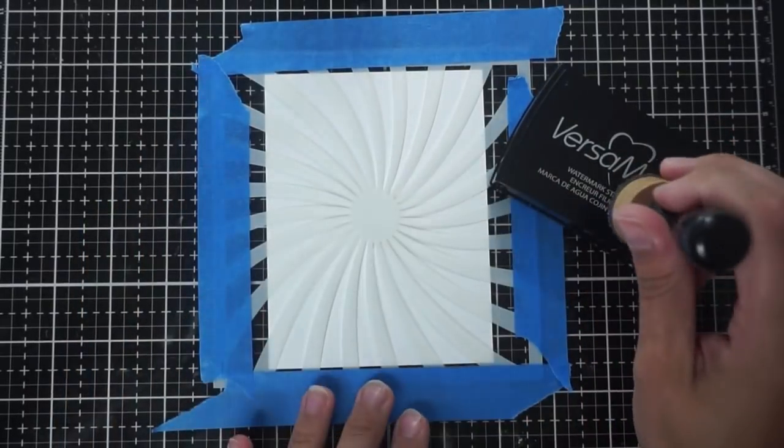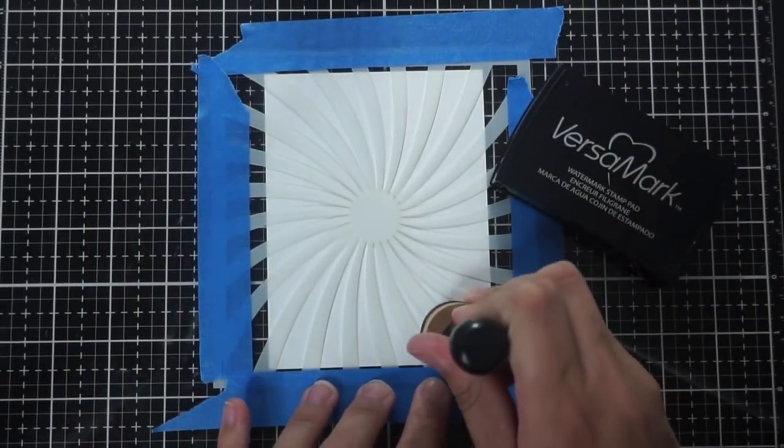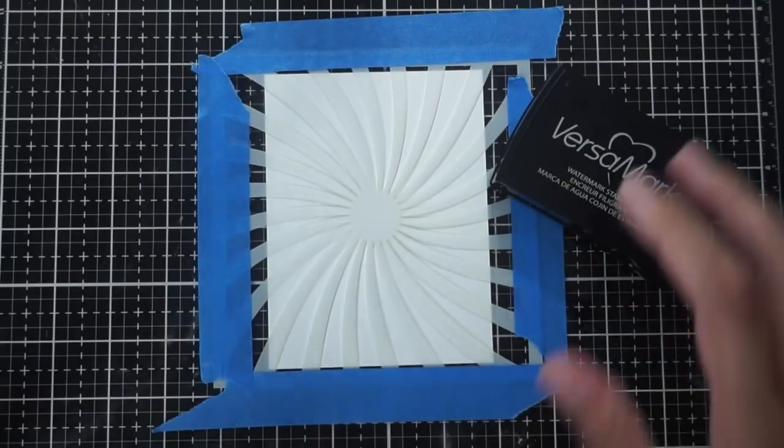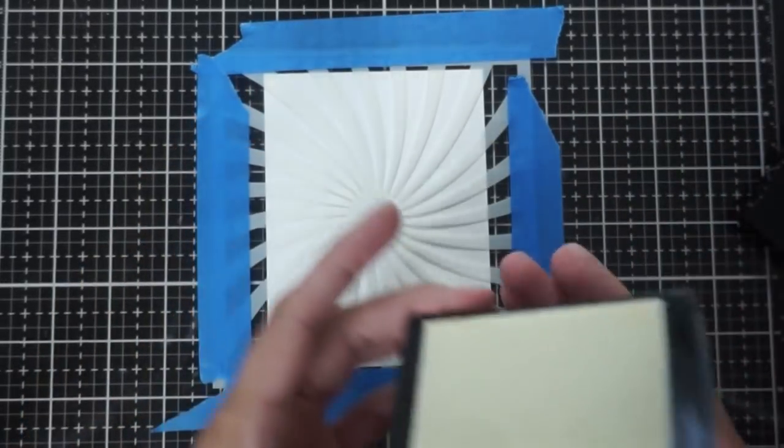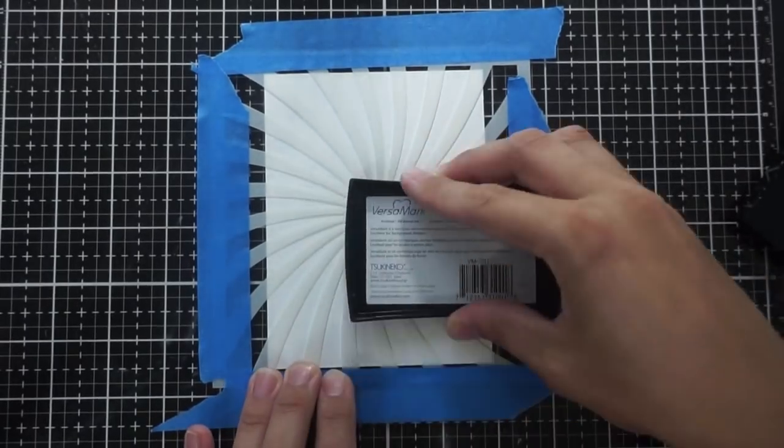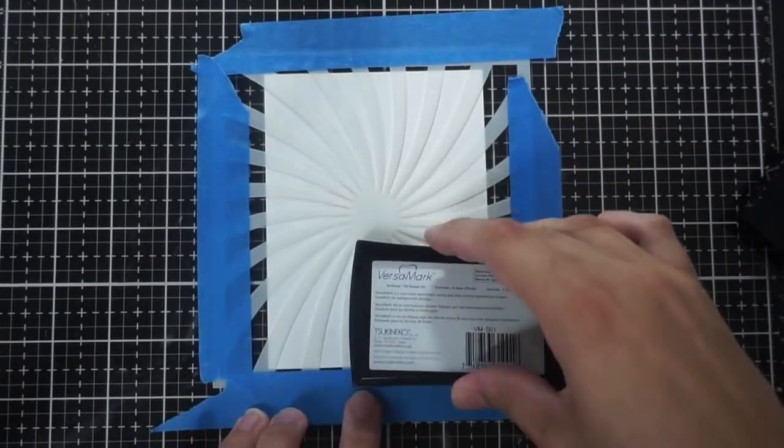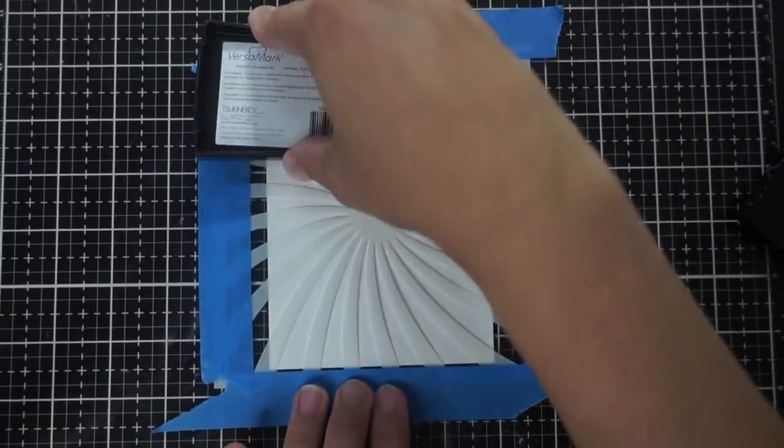I'm going to use Versamark ink to do this and I'm going to go pad on paper but you could use an ink blending tool in sort of like a smushing style if you like that a little bit better, but I tend to get better results with pad to paper so that's what I'm doing here.